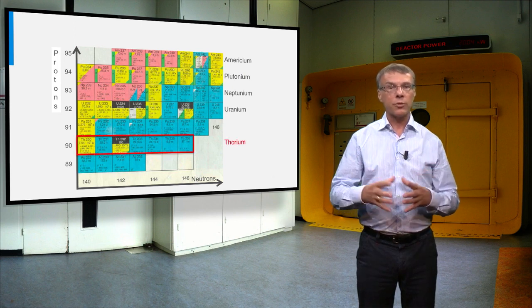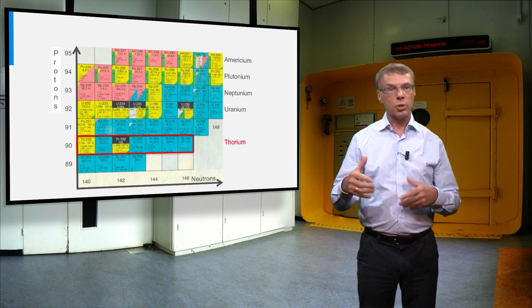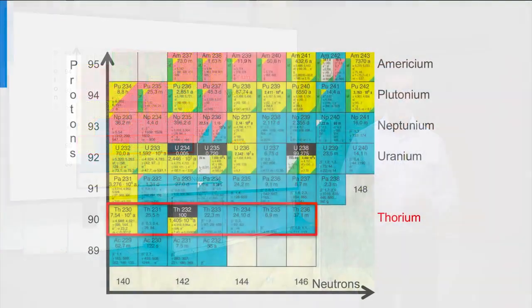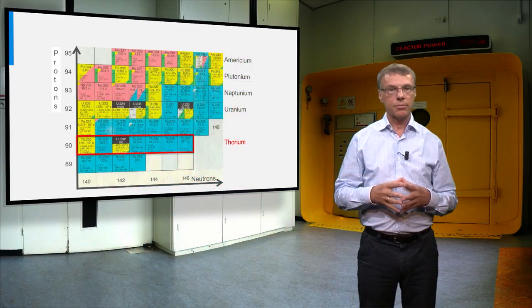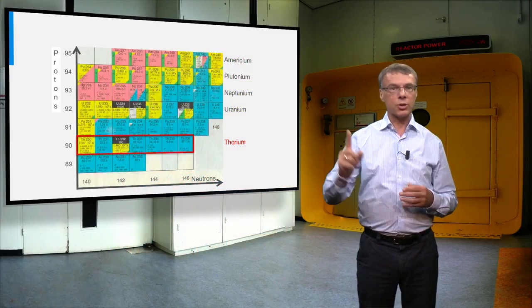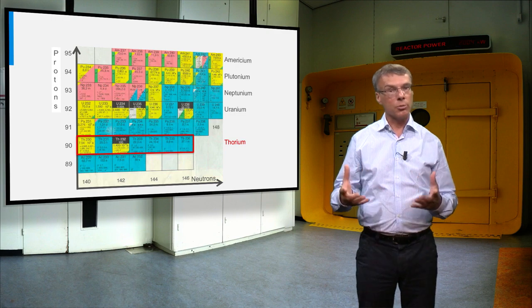Each row shows the isotopes of one particular element. The red box, for example, shows the isotopes of the element thorium, and the black or partly black squares indicate the isotope that can be found in nature. Thorium has only one natural isotope, namely thorium-232.